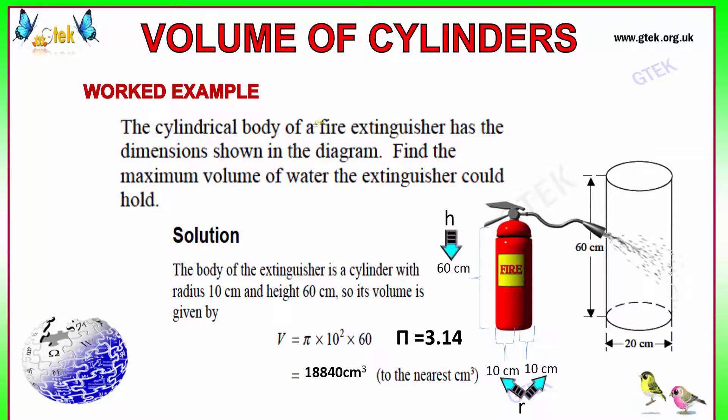Let's move on to a typical example: a cylindrical body of a fire extinguisher has the dimension shown in the diagram. It's 20 centimeter and 60 centimeter. The body of the extinguisher is a cylinder with a radius of 10 centimeter and the height is 60 centimeter. Obviously, if the radius is 10 centimeter, the total width is 20 centimeter. So the formula is πr²H. π into 10 square into 60. The volume is 18,840 centimeter cube.